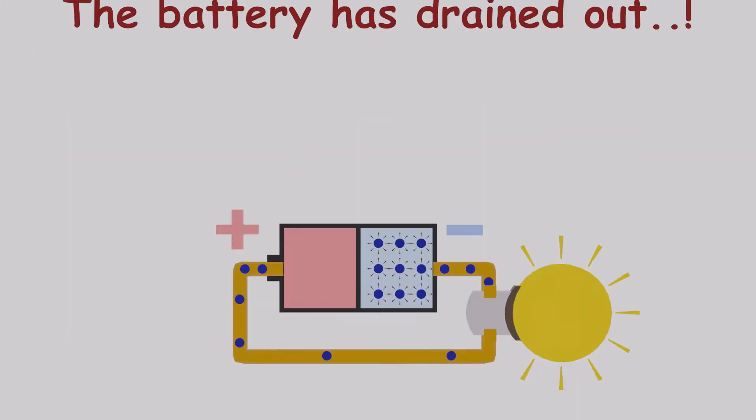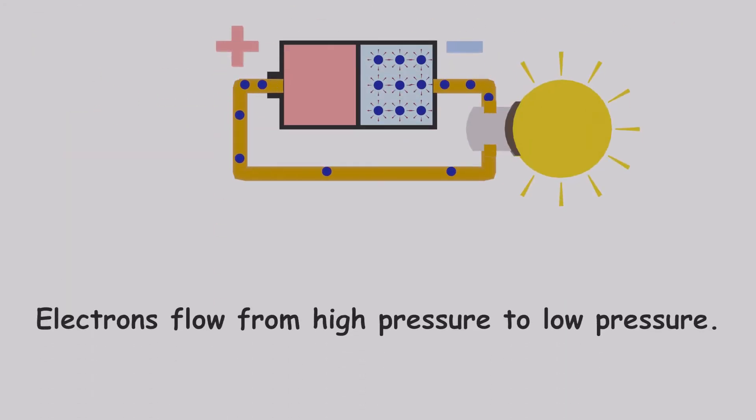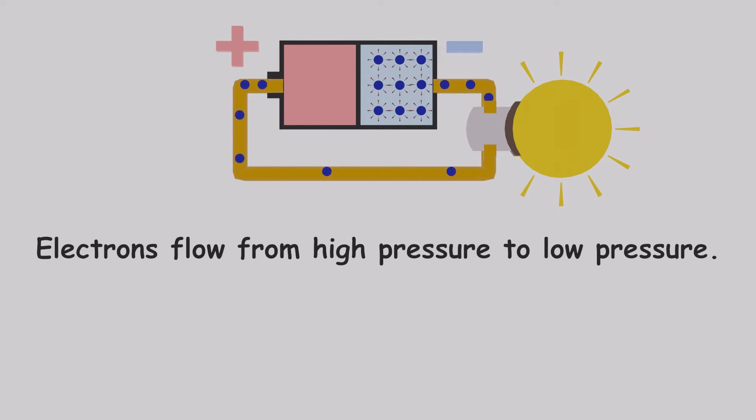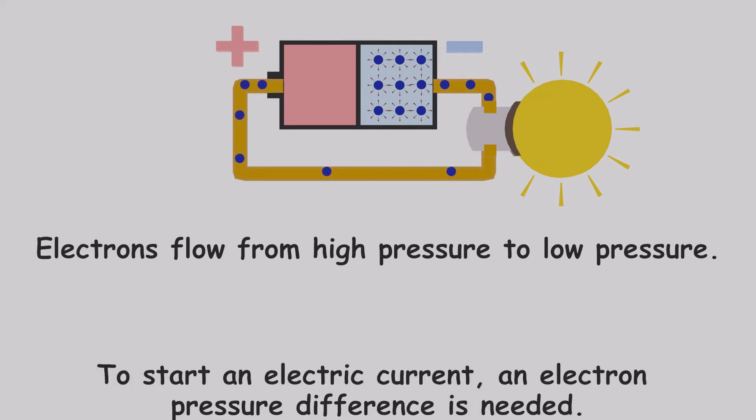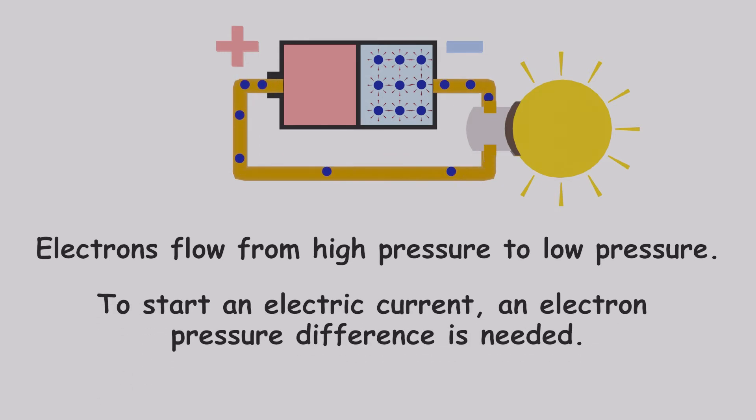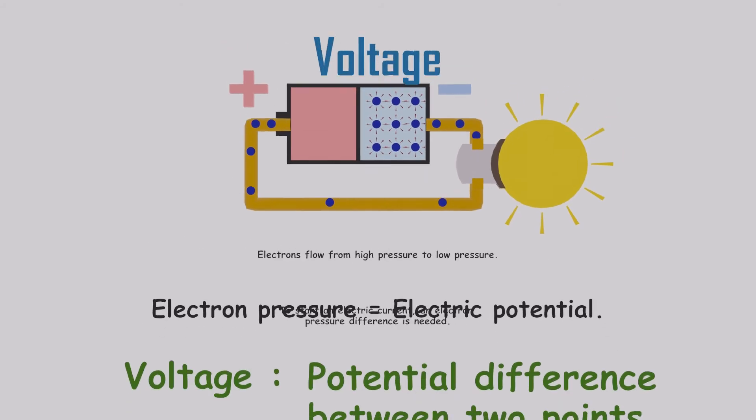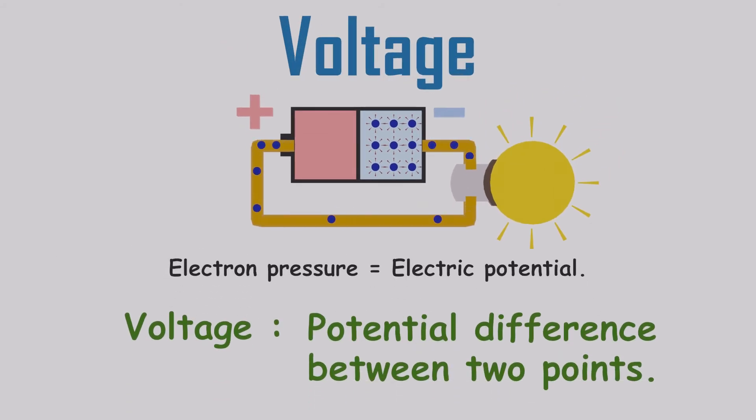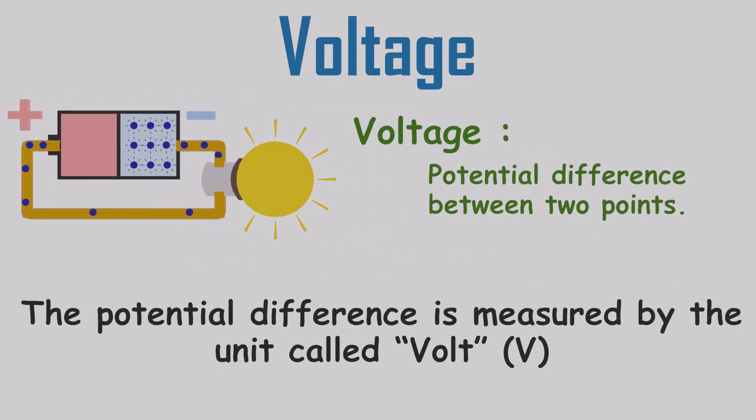Electrons flow from high pressure to low pressure. To start an electron flow from one point to another in a circuit, an electron pressure difference is needed. This electron pressure is also called the electric potential. The electric potential difference between two points is called the voltage between those points, and it is measured by the unit called volt.